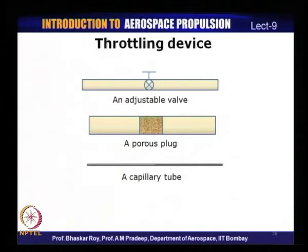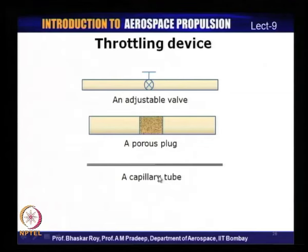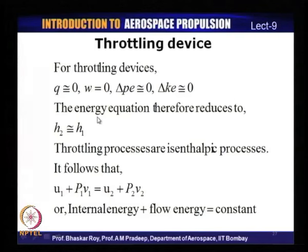Some examples of throttling devices shown include a valve (where adjusting the valve creates a large pressure change), a porous plug (a porous substance within a pipe that causes significant pressure drop as mass flows through), and a capillary tube. Thermodynamically, all three devices are the same. For throttling devices: net heat transfer is zero, work output W is zero, and kinetic and potential energy can be assumed approximately zero, so the energy equation reduces to H2 equals H1.